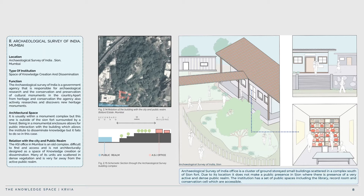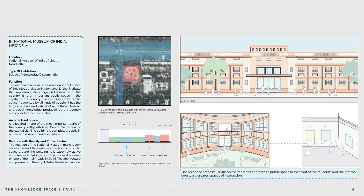The Archaeological Survey of Mumbai, located in Sion, is both a place of creation and dissemination of knowledge, responsible for archaeological research and conservation of cultural monuments. The ASI office is located outside the Sion Fort, surrounded by thick vegetation and difficult to locate — just a couple of small sheds scattered loosely. Even though it is accessible in nature, its architecture is not designed to be so. The National Museum of India at Rajpath in Delhi is the most important space of knowledge dissemination.